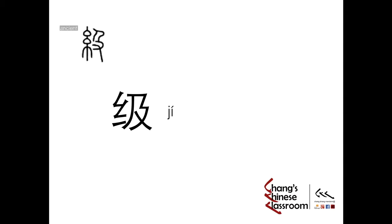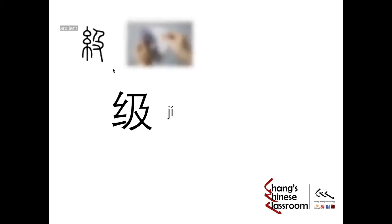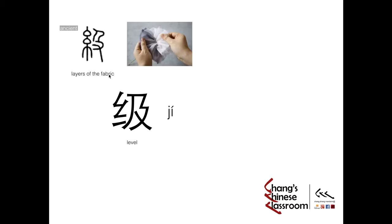Take a look at this ancient Chinese character. The left part here means silk. And here this part is a person kind of making a squat. And the bottom, this part is actually the hand. So it describes a person trying to separate the different layers of fabric. So the meaning of the ancient character is different layers of the fabric, and it evolved to become the most frequently used meaning: level.